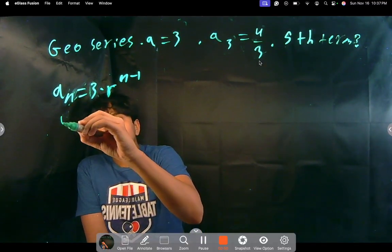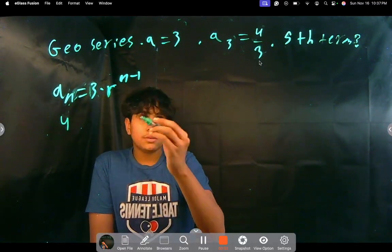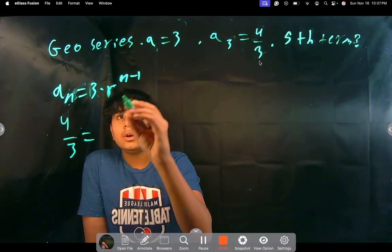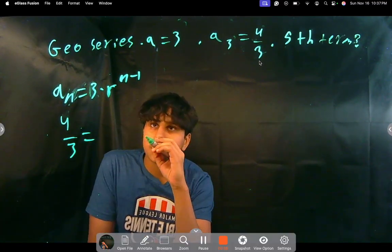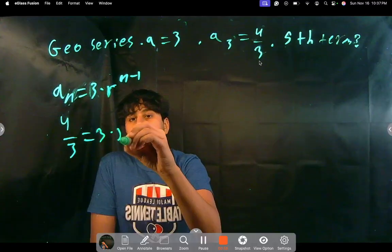So a of 3 is 4 thirds, so we just substitute a sub n which is going to be a of 3 with 4 over 3 with n equals 3, so it'll be 3 times r squared. Right?